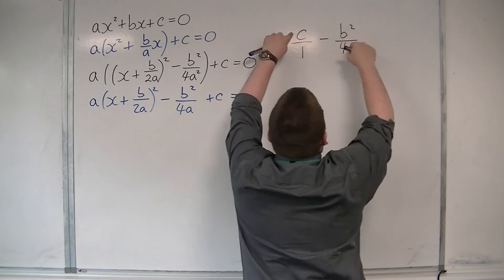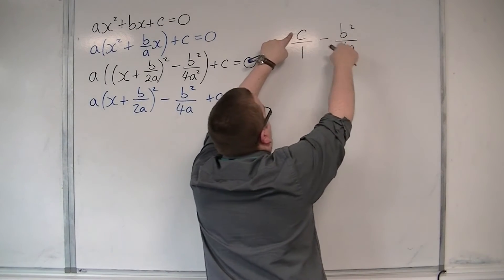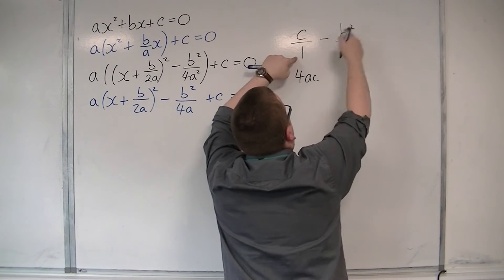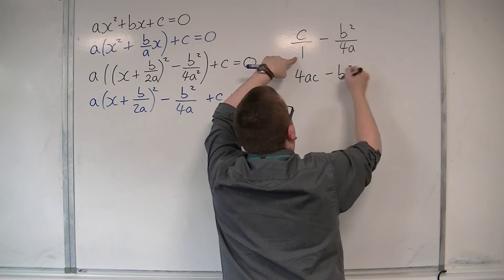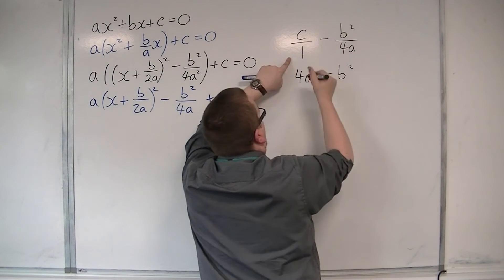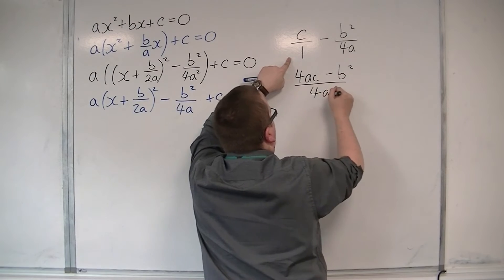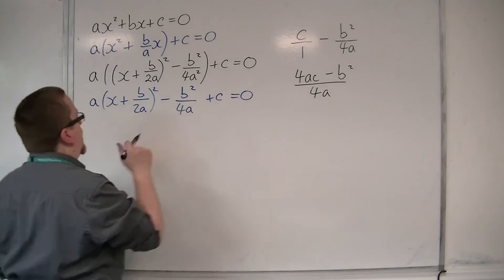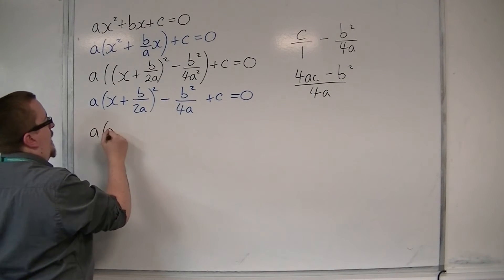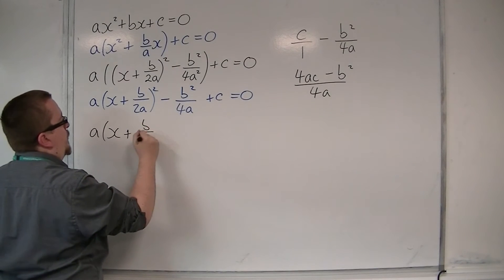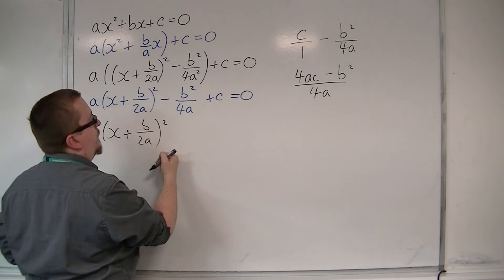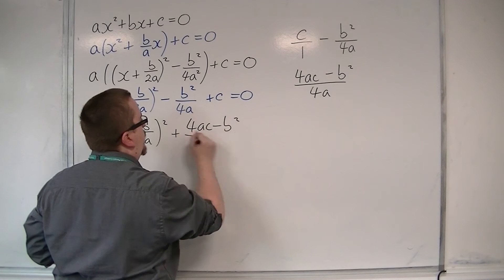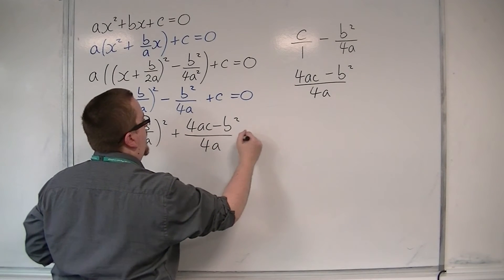I've got this diagonal, so 4a times c, so 4ac. Then I'm going to take away that diagonal, so minus b squared, all over 4a. Currently, what I have is I've got a times x plus b over 2a, all squared, plus 4ac minus b squared, all over 4a, is equal to 0.